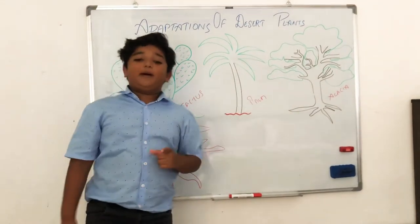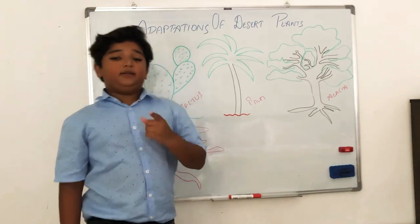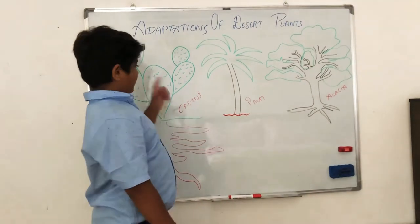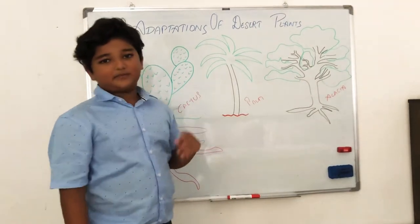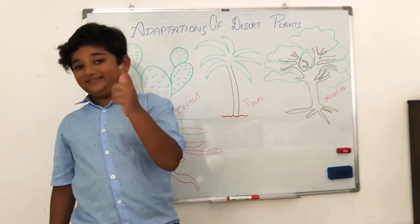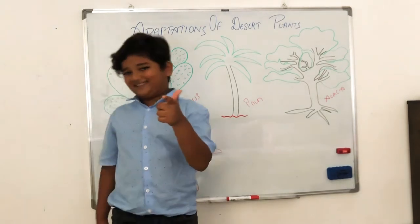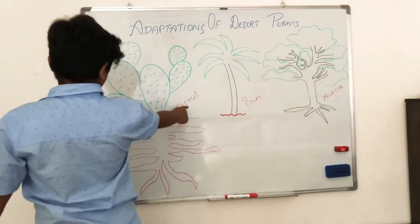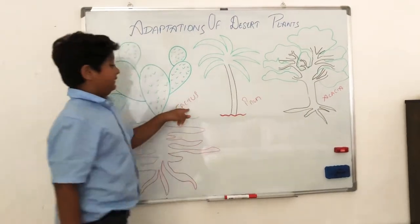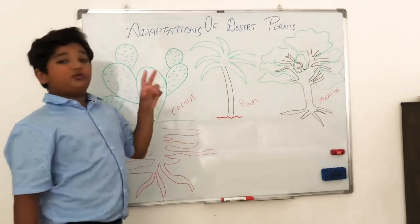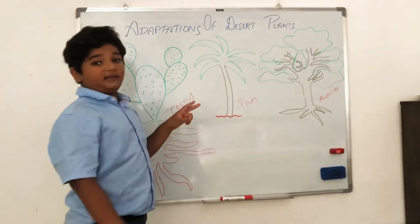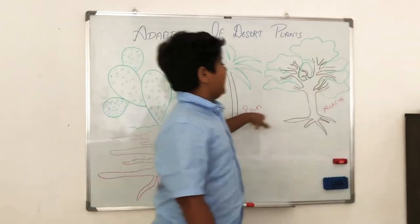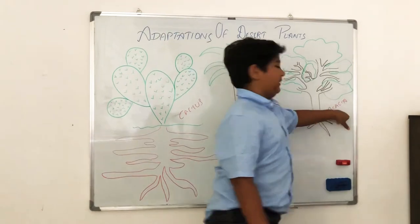First, what comes to your mind when you think about plants in deserts? Yeah, you guessed it right — it's a cactus. The cactus is a very common plant, and there are two more common desert plants: palm and acacia.